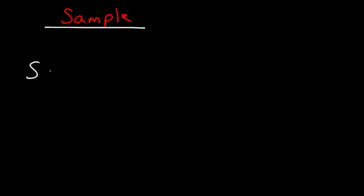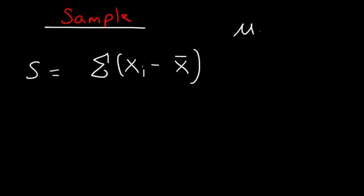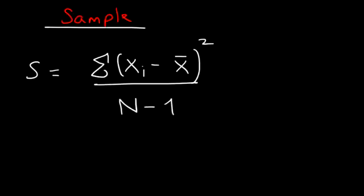The next formula is the sample standard deviation. If you have just a sample of a population — not the entire population — then you want to use this formula. S, which is the standard deviation, equals the sum of all the differences between every point and the sample mean, squared. The key difference is that it's divided by n minus 1, as opposed to n. That's how you calculate the standard deviation of a sample.